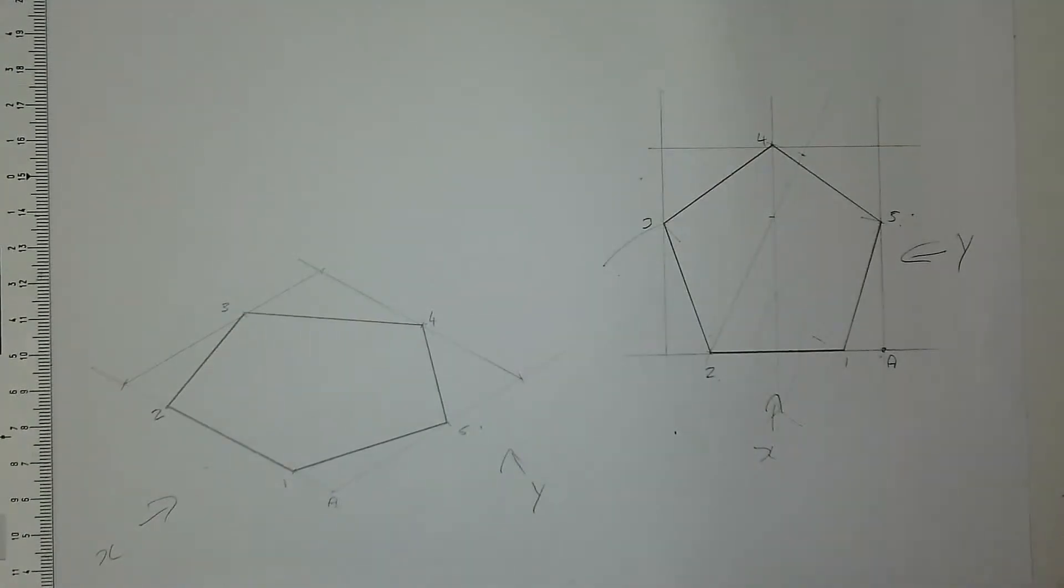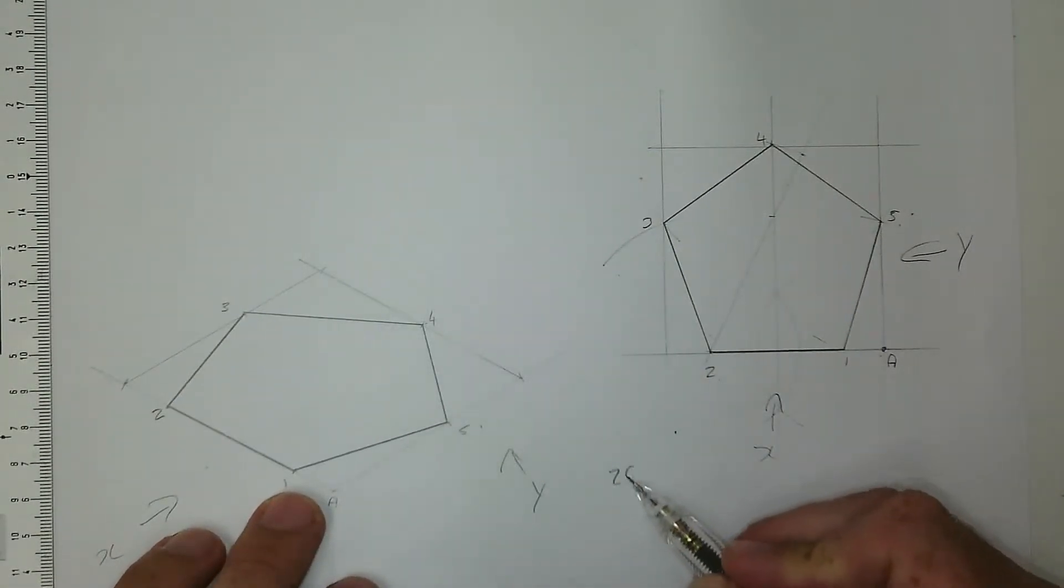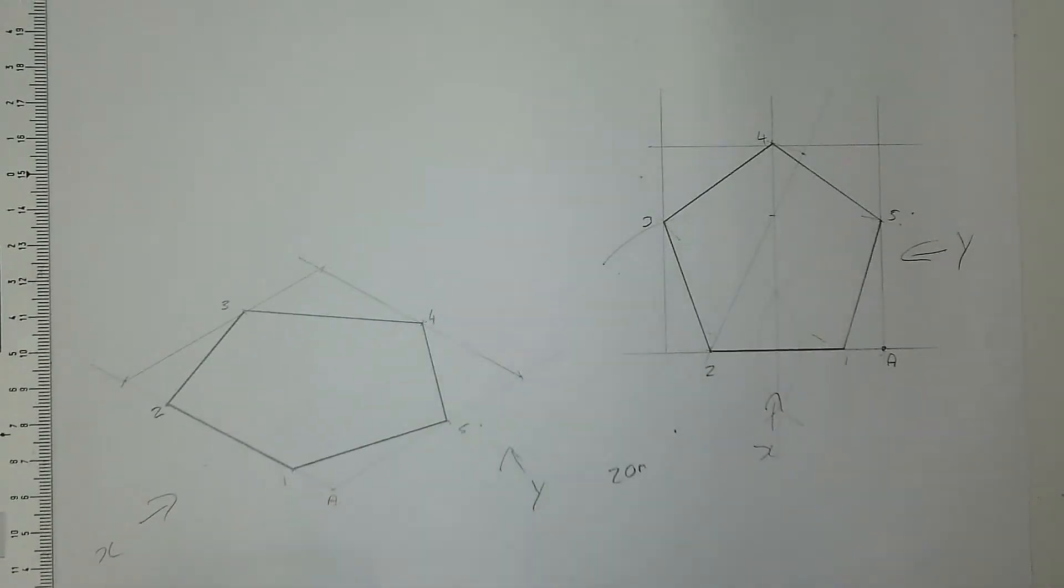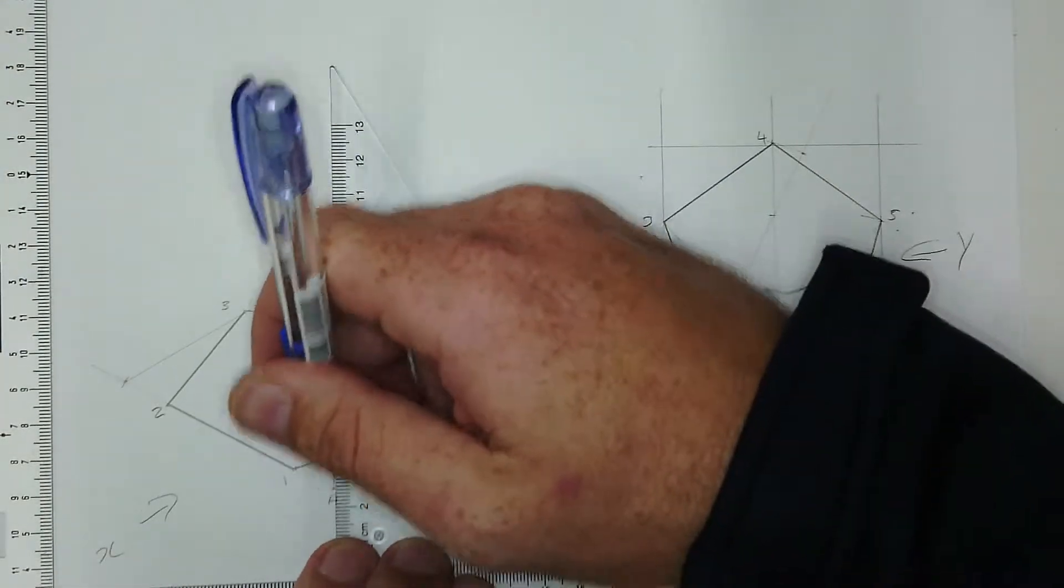There you go, there's your pentagon in 3D space. So if you want to add depth to it or height to it, let's say I want to add 20 millimeters thickness to it. All you've got to do is your isometric block.